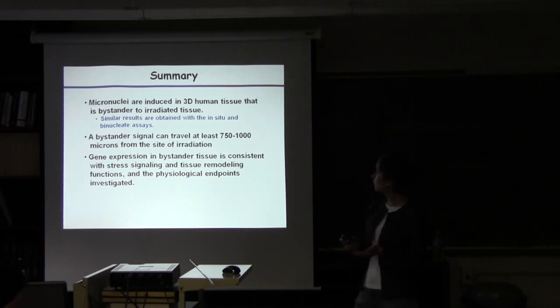So that's really all that I have to say here. So just kind of going through what we've seen is that micronuclei are indeed induced in 3D tissues that is bystander to a radiation tissue. And this has been done in human tissue and we see similar results whether we do the in situ or the binucleated assay. And we've shown by numerous means now that the bystander signal can travel at least between 750 and 1000 microns from the initiating site of the irradiated cells, and again in three-dimensional tissue. And then the gene expression that we found in the bystander tissue is consistent with stress signaling and tissue remodeling functions that we've seen physiologically, some of these remodeling differentiation responses that were measured as physiological endpoints.